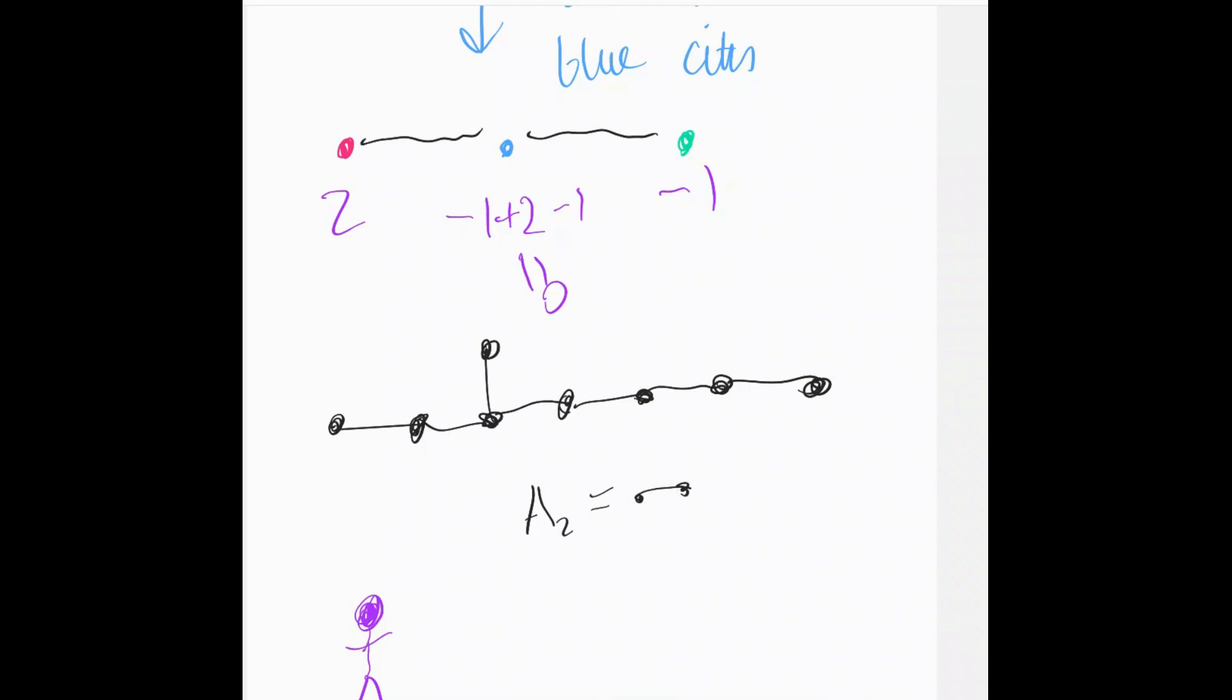But basically then we can get E8. So we think of all these population vectors that we can reach starting from these different unit vectors, and they form this lattice.